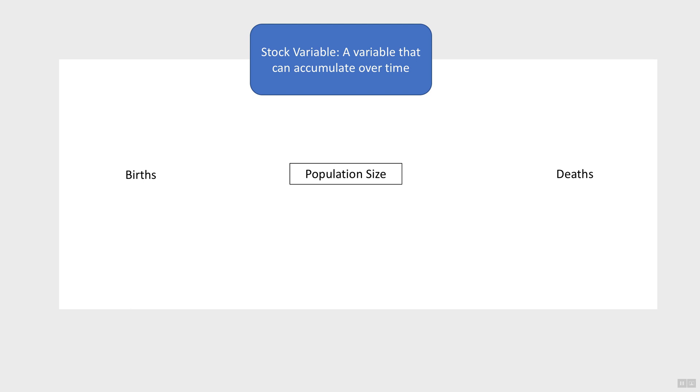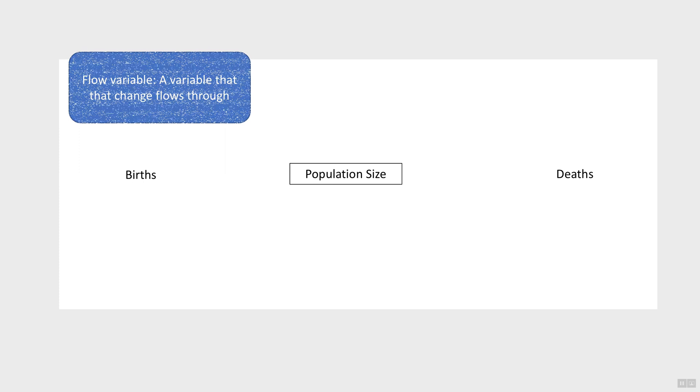In contrast, births and deaths do not accumulate over time. Rather, they are the variables that the change flows through. So we call them flow variables.